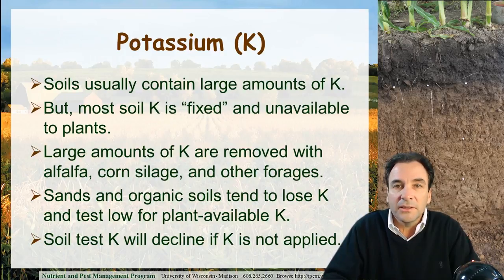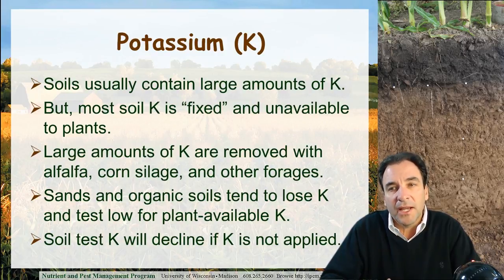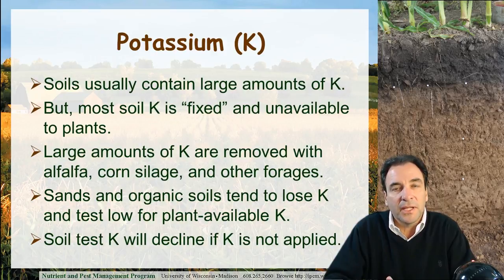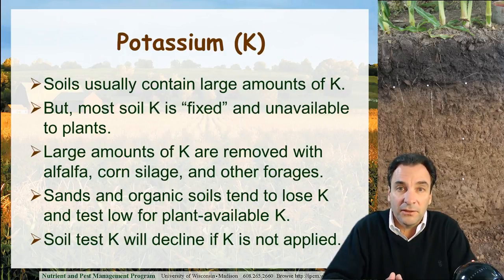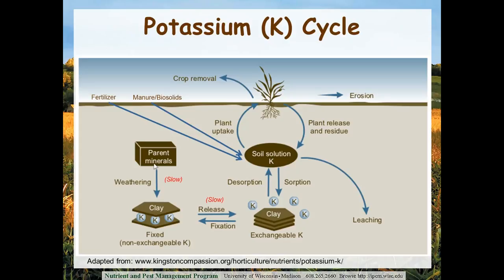Alfalfa, corn silage, and other forage legumes all remove a great deal of potassium from the soil. Sands and organic soils tend to lose potassium from the soil profile and typically test low for plant-available K. We'll talk about some unique management considerations for our sands and organic soils. If we don't apply potassium, we will draw down soil test K levels, and these can draw down much more quickly than the drawdown we saw with soil phosphorus levels.